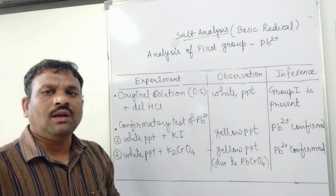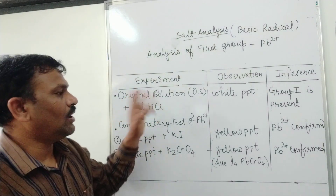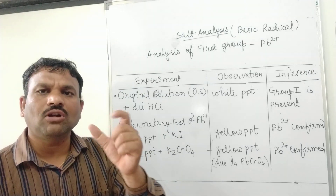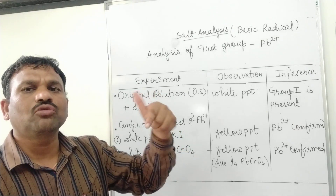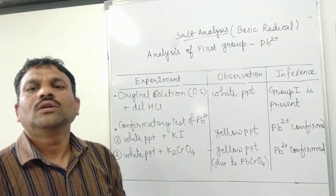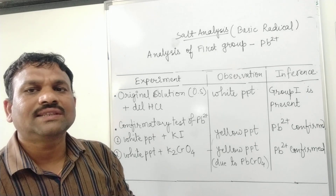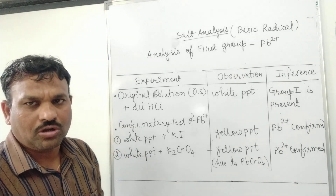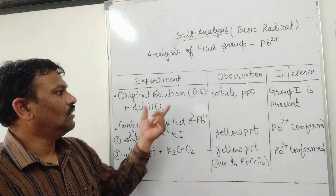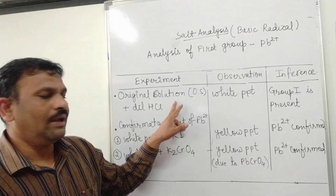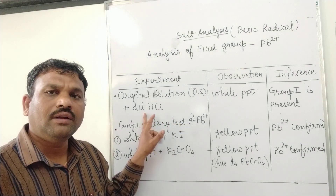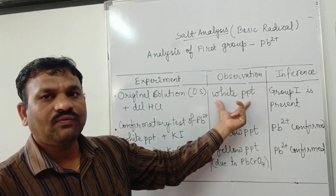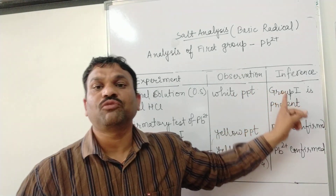First of all, for the testing of lead ion, we have to prepare the original solution. For the preparation of the original solution, we take the salt in a test tube and add some amount of water. Although the solubility of lead salt is not very high, so we have to take a very small quantity of the salt. When we add dilute hydrochloric acid to the original solution, it forms a white precipitate.